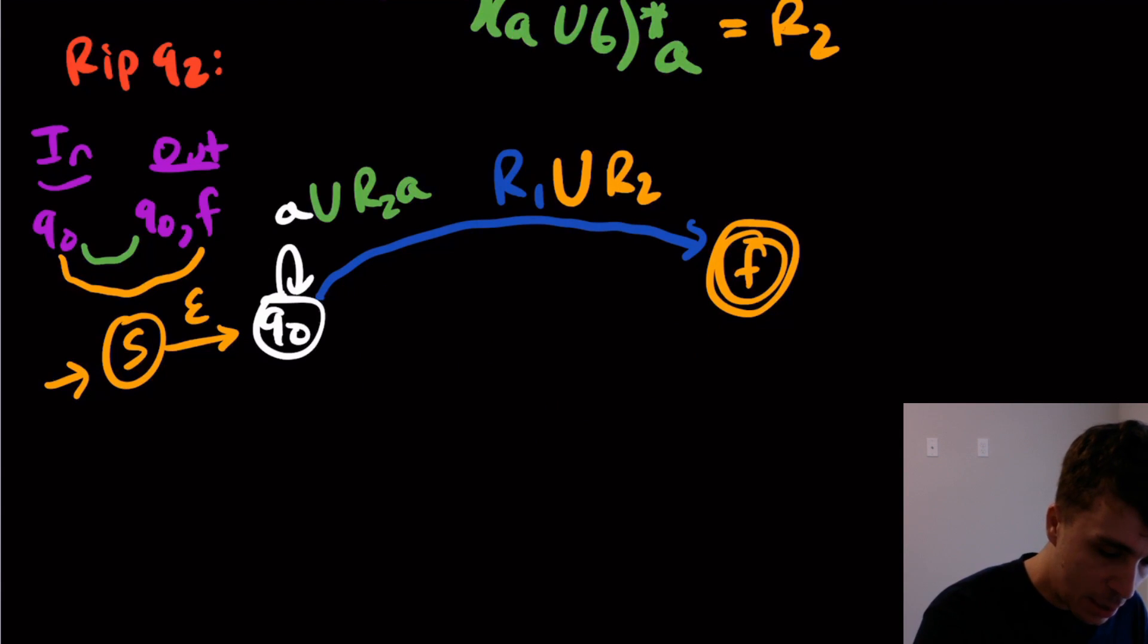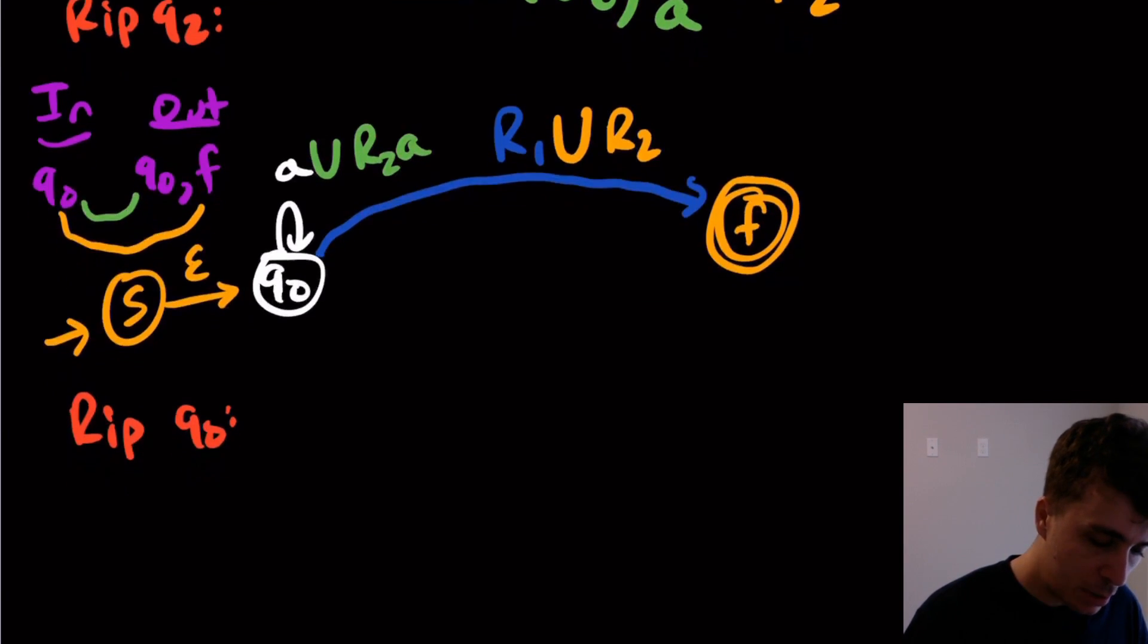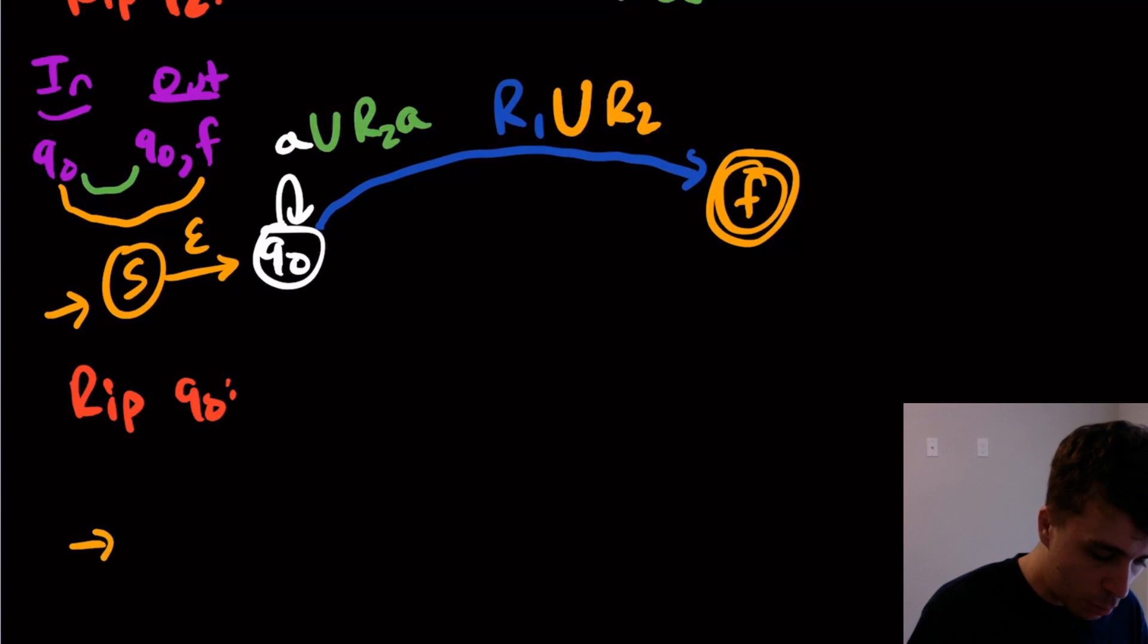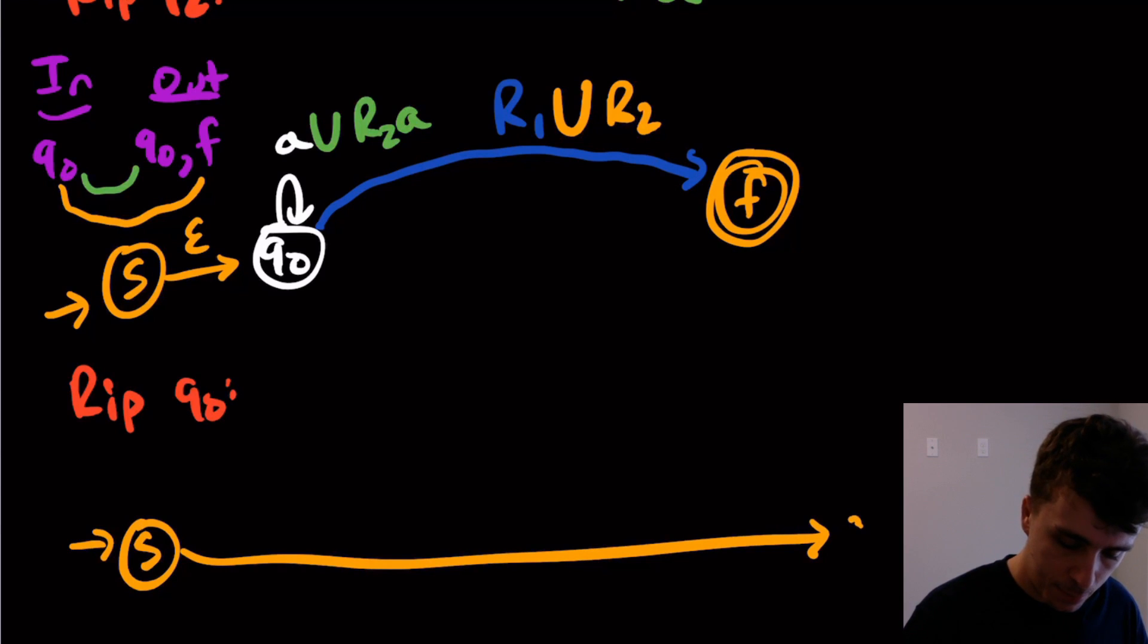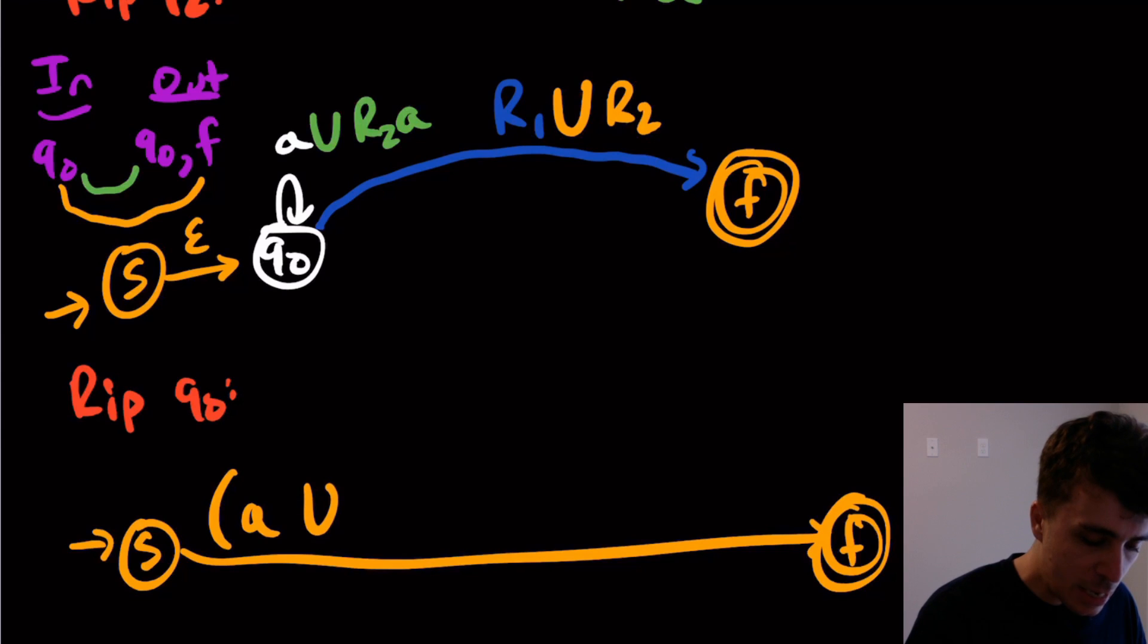And now, when you have one state, it's really easy what to actually do here. So RIP Q0. So here, it's pretty clear what the actual machine is going to look like. Well, epsilon concatenated with anything doesn't change anything. We have this whole thing as a self loop. So that's going to be, the whole thing is going to be starred. A union R2 A, whole thing star, concatenated with this thing. And because it's a union, and we're concatenating with the whole thing, we have to put parentheses around it because of precedence.